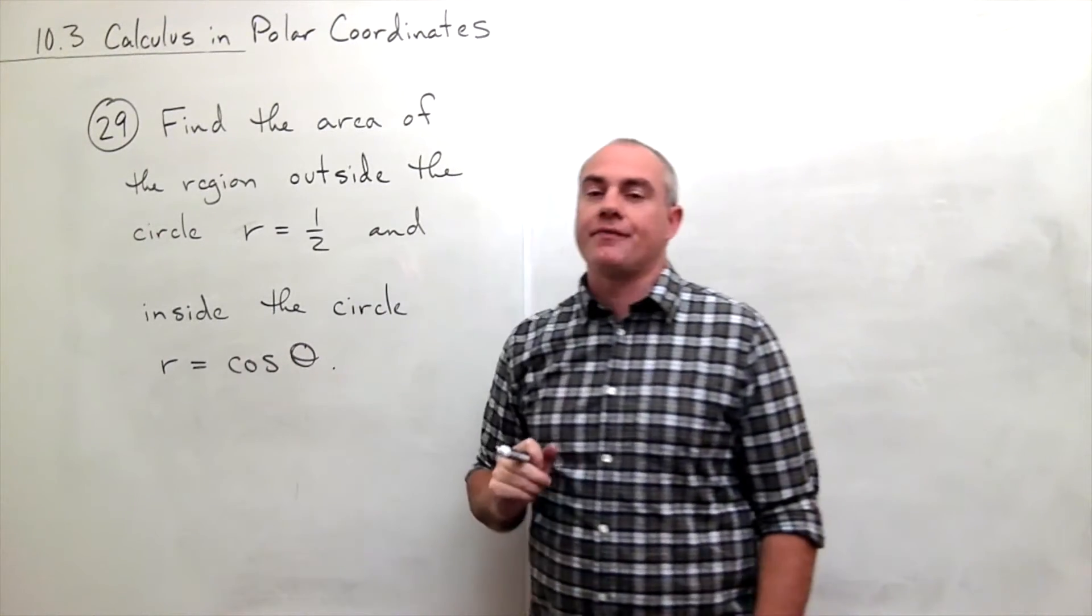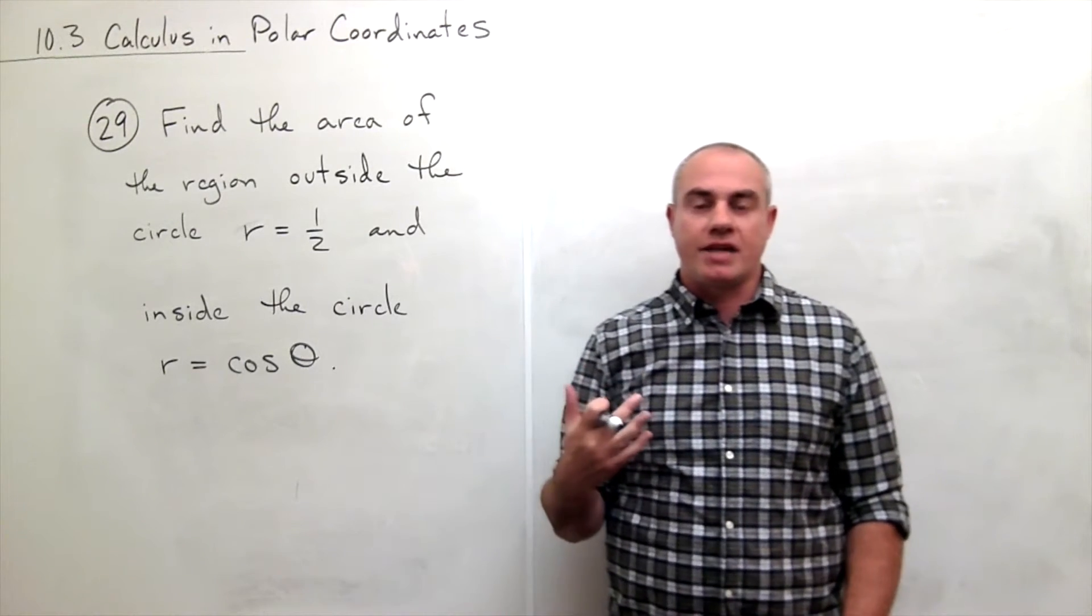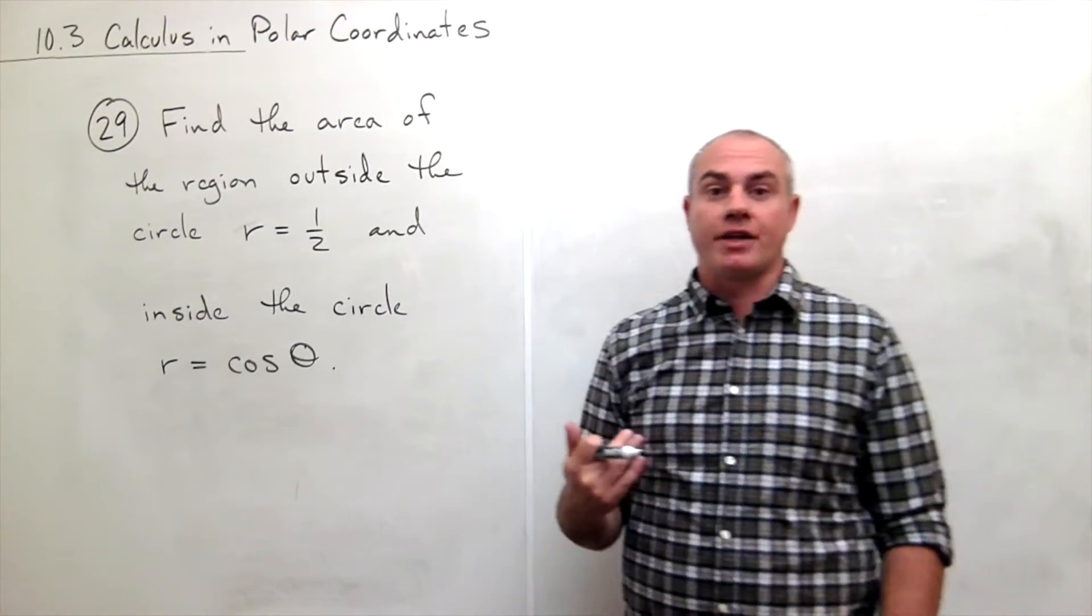r equals cosine of theta. So before we start trying to actually figure this out, let's just draw a picture and look at the region that we're trying to find the area of.